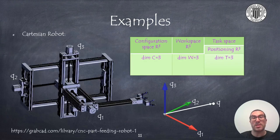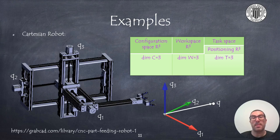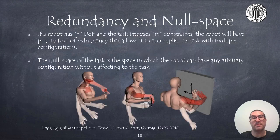To finish this series of examples, we will show the configuration, work, and task spaces of a Cartesian robot. All of them are subspaces of R3. Its configuration is defined with a vector with three real displacement numbers.